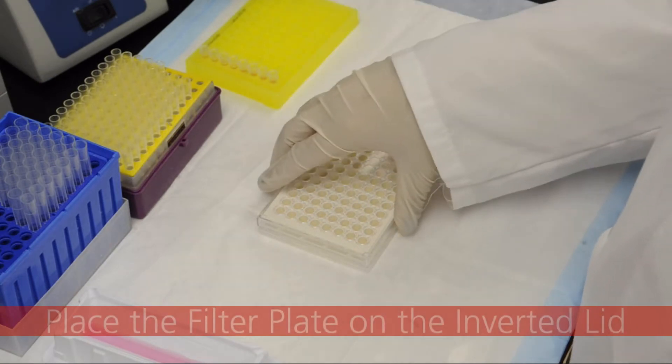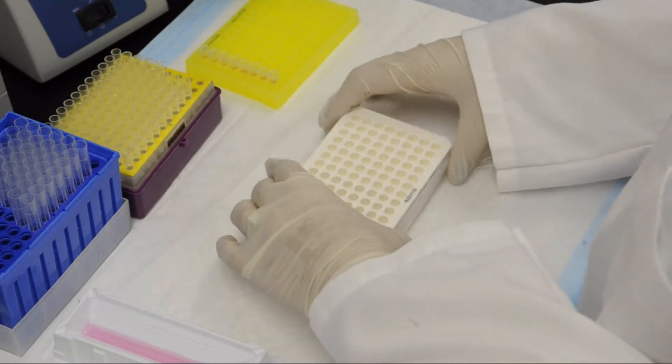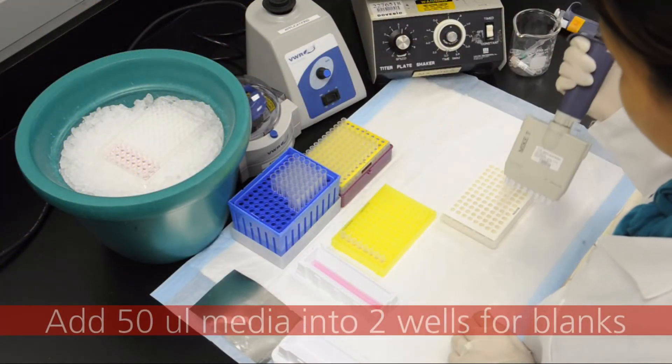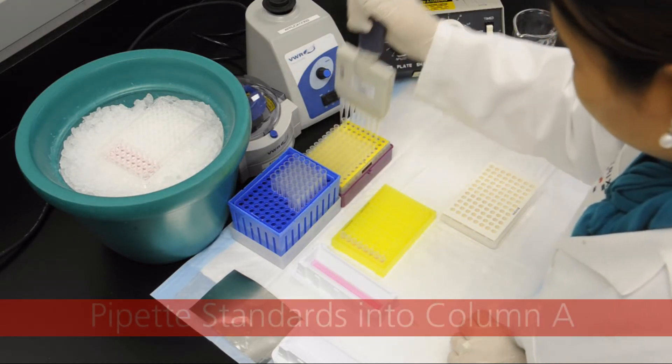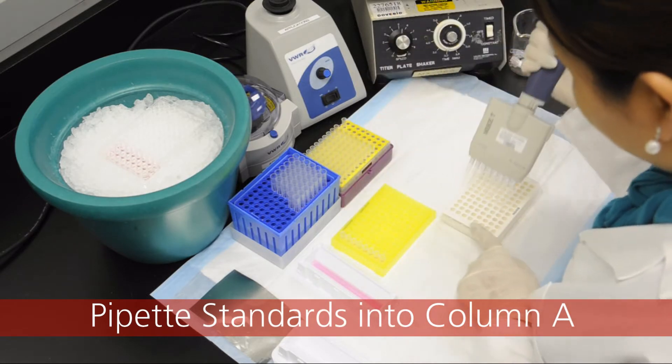Remove the lid of the filter plate, invert, then place the filter plate on top of the inverted lid. Pipet 50 microliters of media into 2 wells of the filter plate to act as blanks. Transfer 50 microliters of the standard using a multi-channel pipet into column A.